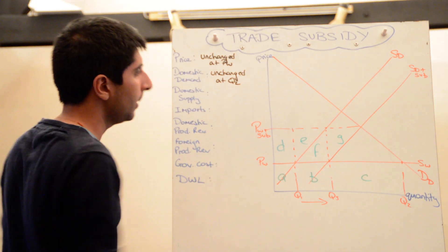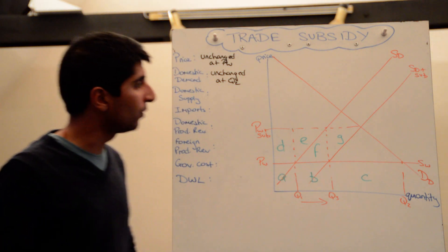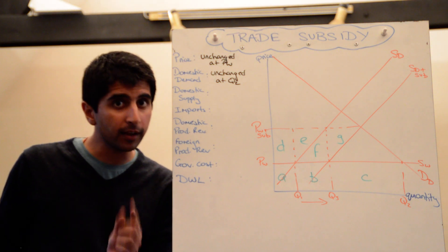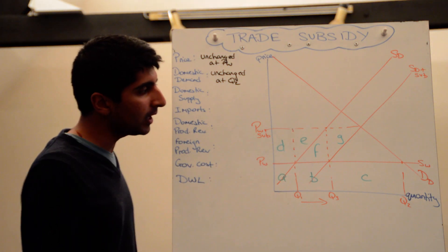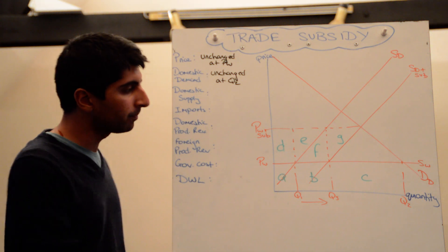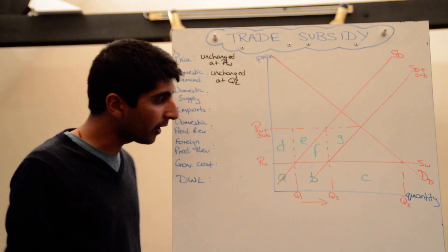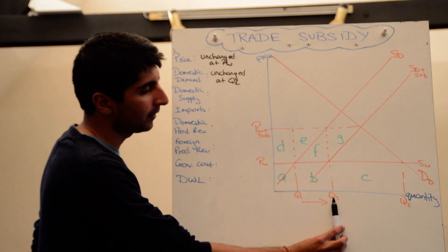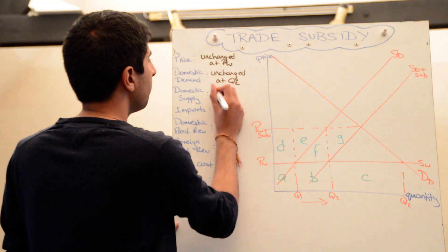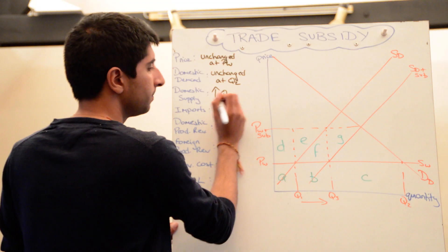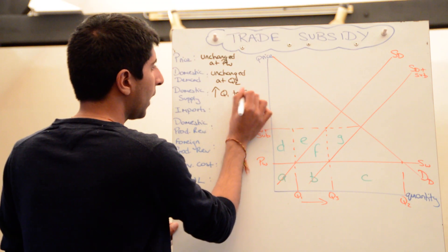Price pw, domestic demand is q2, that's not changed. Domestic supply has changed. It was initially q1, now with this subsidy and more suppliers in the market and effectively with a higher price because of it, domestic supply has increased. It's increased to q3, so it was q1, now it's all the way to q3.